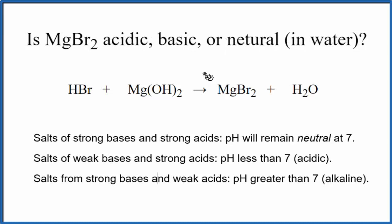To do that, we need to look at the neutralization reaction that produced the magnesium bromide. So we have hydrobromic acid plus magnesium hydroxide. That's our neutralization reaction that gives the salt, and then we get water.